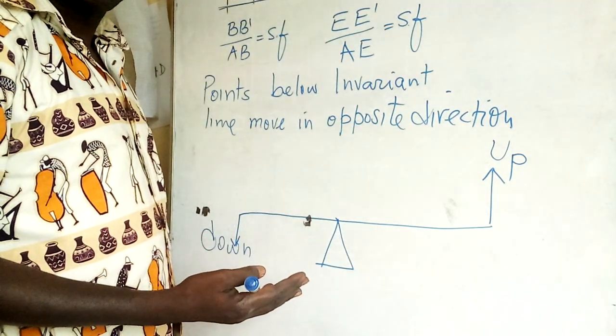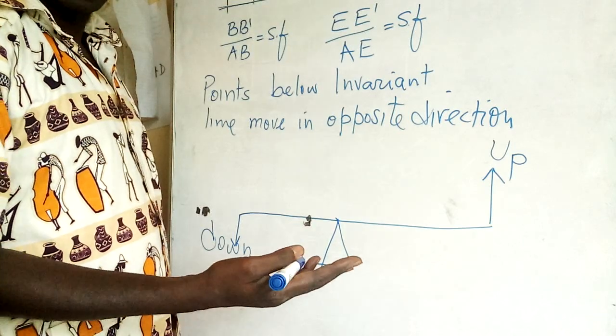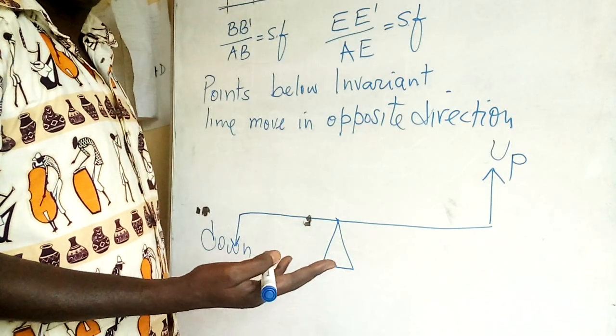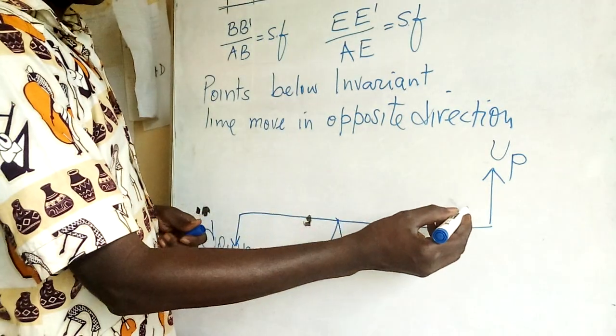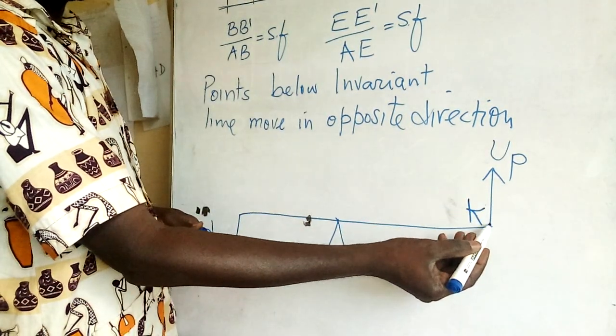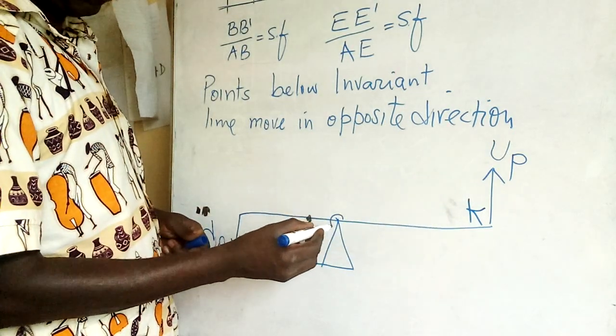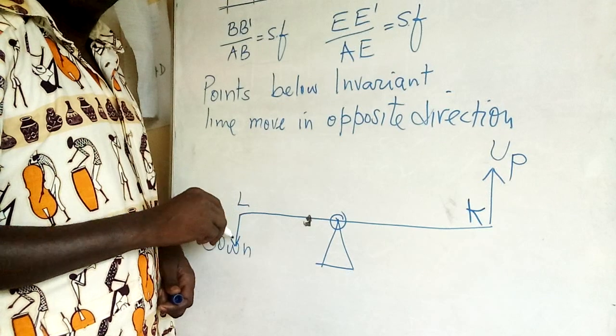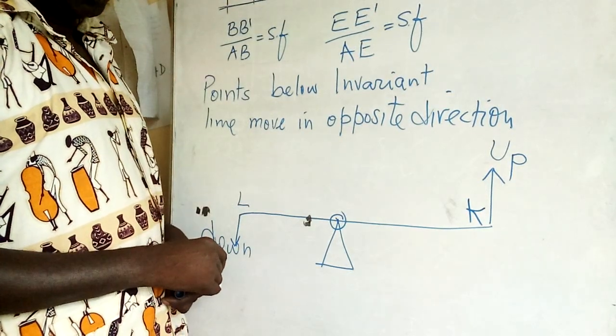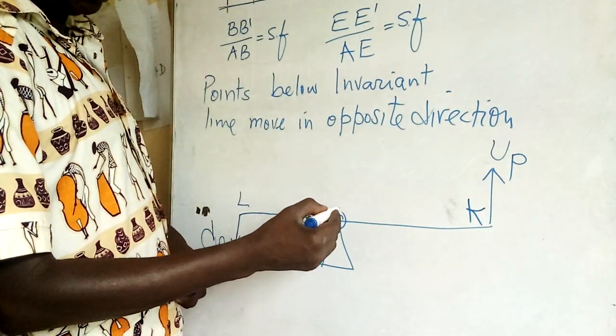You borrow this from the lever system in physics. If this is point K, if point K moved up, and this is our fulcrum, then point L will move down.